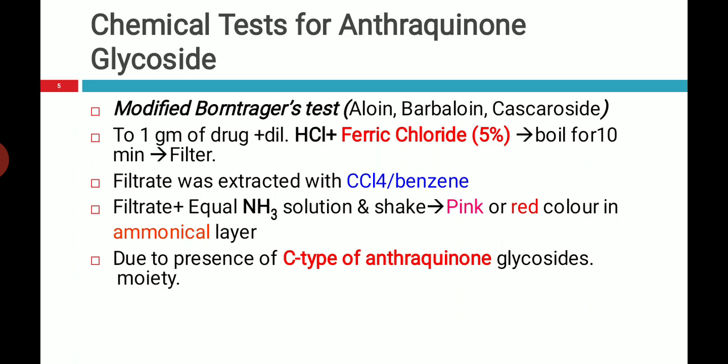Next is the modified Borntrager test, which can be used for C-type anthraquinones. Usually, aloin, barbaloin, and cascaroside give this test positive.